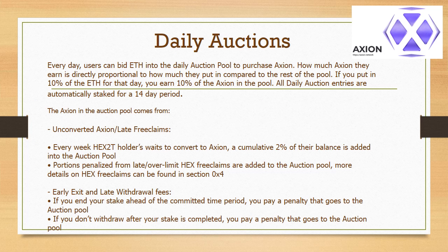The daily auction — putting tokens and value into your pocket. To get Axion, it needs to be claimed by Hex2T holders. The longer they wait to claim, the more penalties they face — about 2% of their total per week. This 2% is added into a daily auction pool where people can bid using ETH on the Axion tokens within it. If you bid 10% of the ETH on that day, you get 10% of the pool rewards.